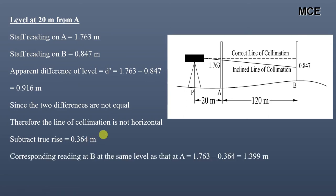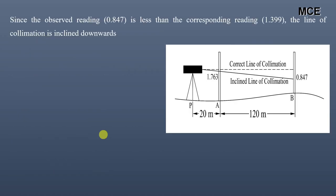Subtracting the true rise, the corresponding reading at B at the same level as that at A is 1.763 minus 0.364 which equals 1.399 meters. But the observed reading at B is 0.847 meters. Since the observed reading 0.847 is less than the corresponding reading 1.399, it means the line of collimation is inclined downwards.